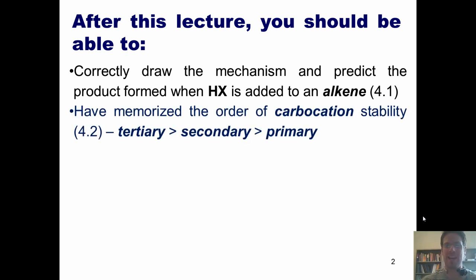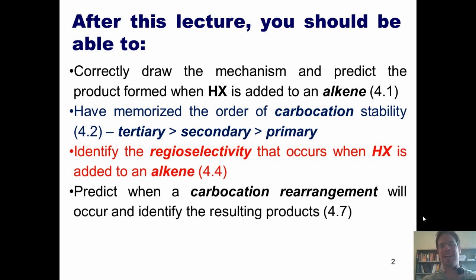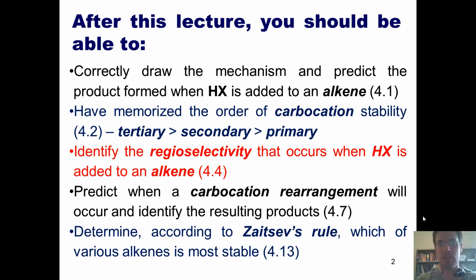Have memorized the order of carbocation stability: tertiary is more stable than secondary, is more stable than primary, which comes from Section 4.2 of our text. Identify the regioselectivity that occurs when HX is added to an alkene from Section 4.4. Predict when a carbocation rearrangement will occur and identify the resulting products from Section 4.7. And determine according to Zaitsev's rule which of various alkenes is most stable from Section 4.13.